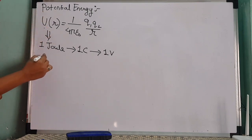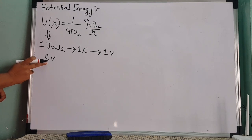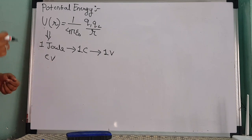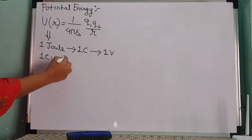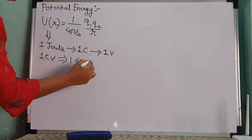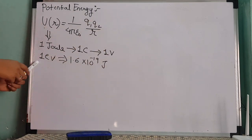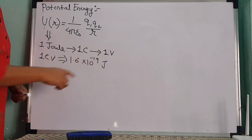There is one more unit — the electron volt. Electron volt is a unit of potential energy that also represents the kinetic energy of an electron. These are the two units of potential energy. The value of 1 electron volt is 1.6 × 10⁻¹⁹ Joule.